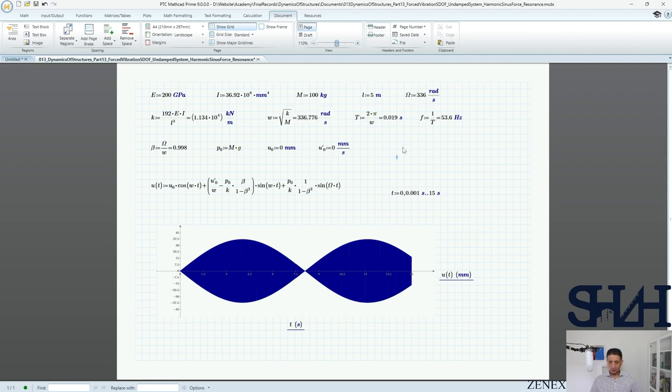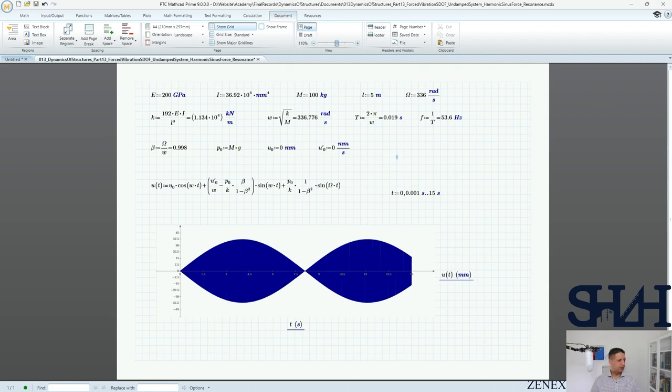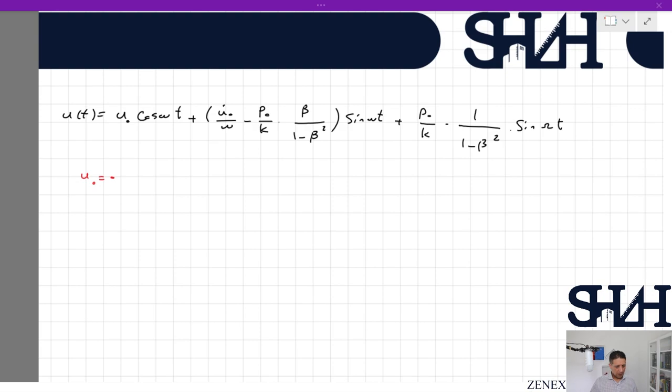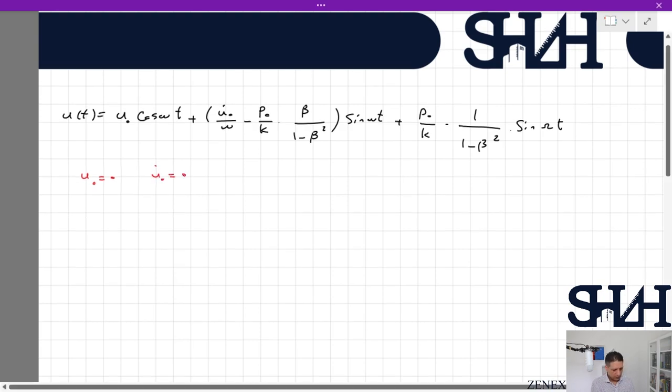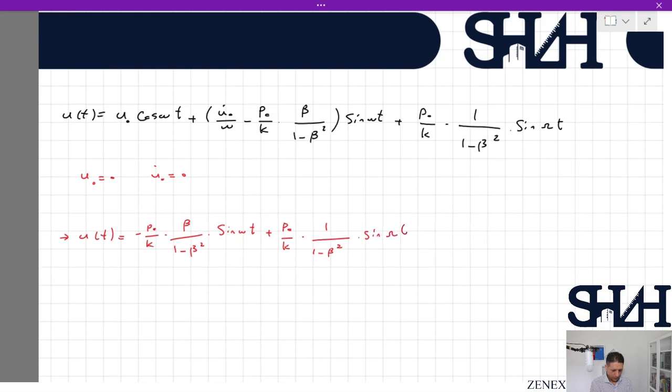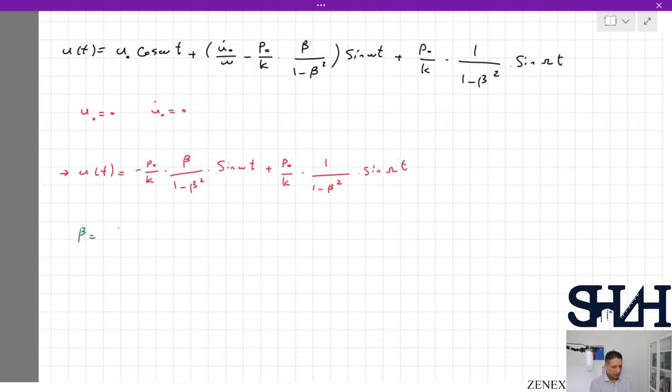then the solution should be changed to another equation. Now we can go through what we had. Here is our solution for the previous model. Now let's assume to make it simplified: u₀ is 0 and u̇₀ is also 0. So I can rewrite u(t) as minus p₀ divided by k times beta divided by 1 minus beta squared times sin(ωt) plus p₀ over k times 1 over 1 minus beta squared times sin(ωₙt). As we know, beta is ω over ωₙ, so ω will be beta times ωₙ.